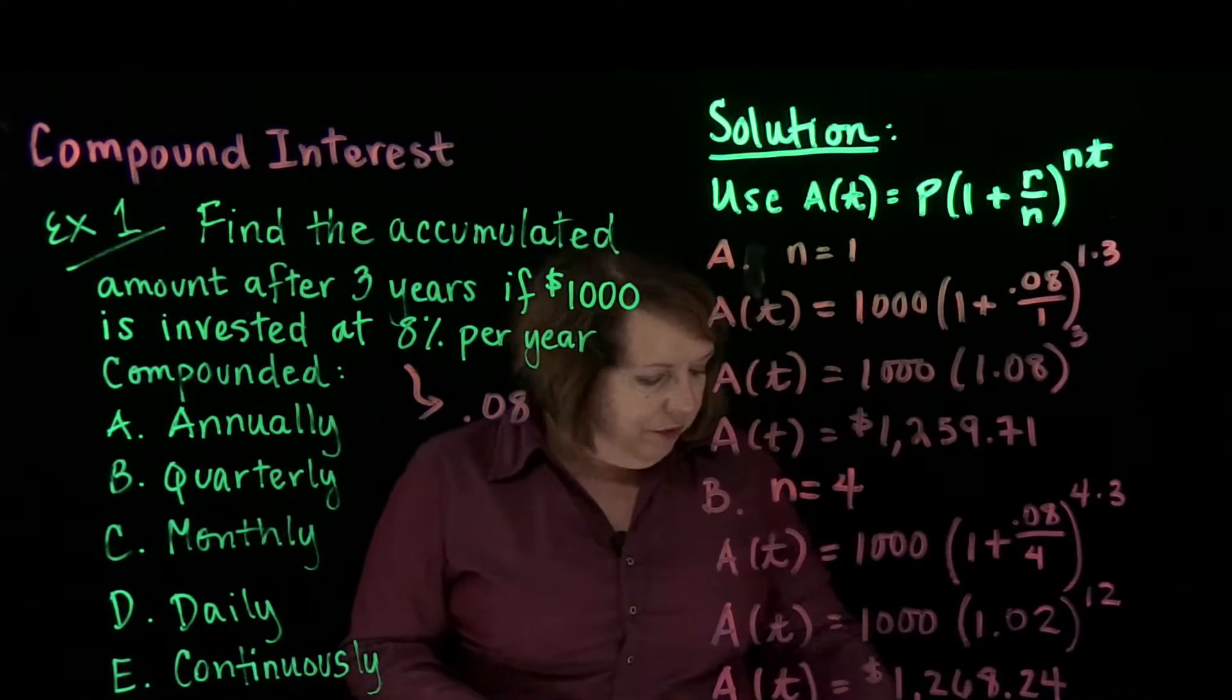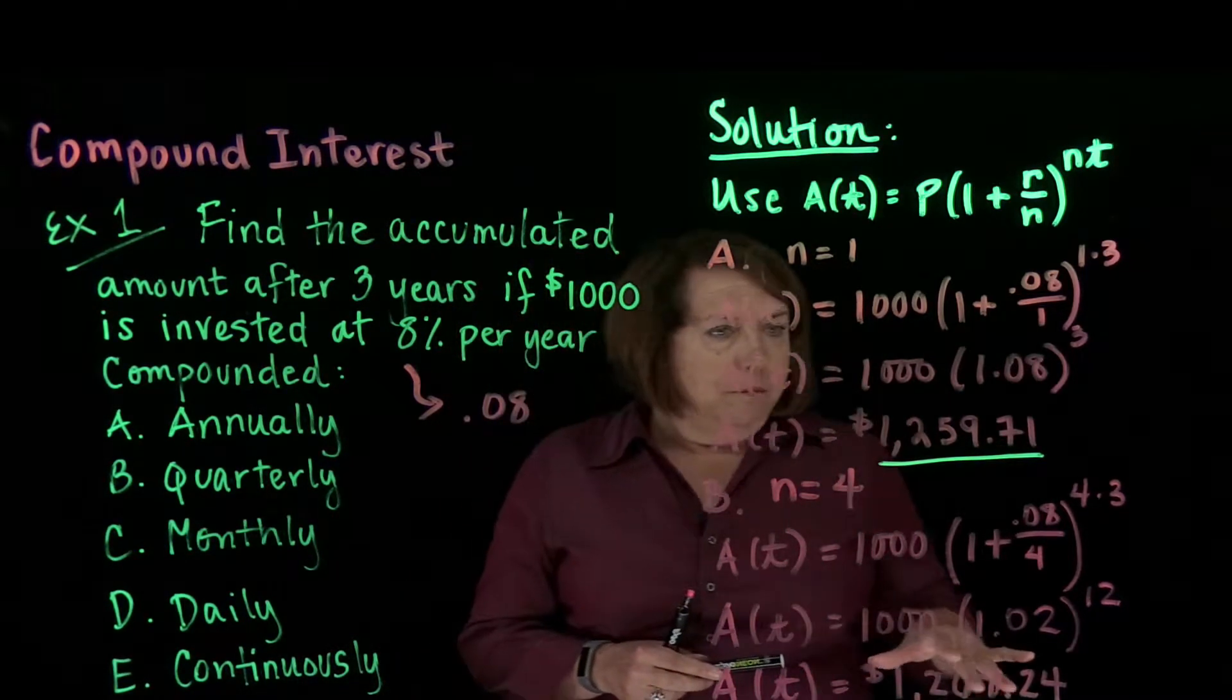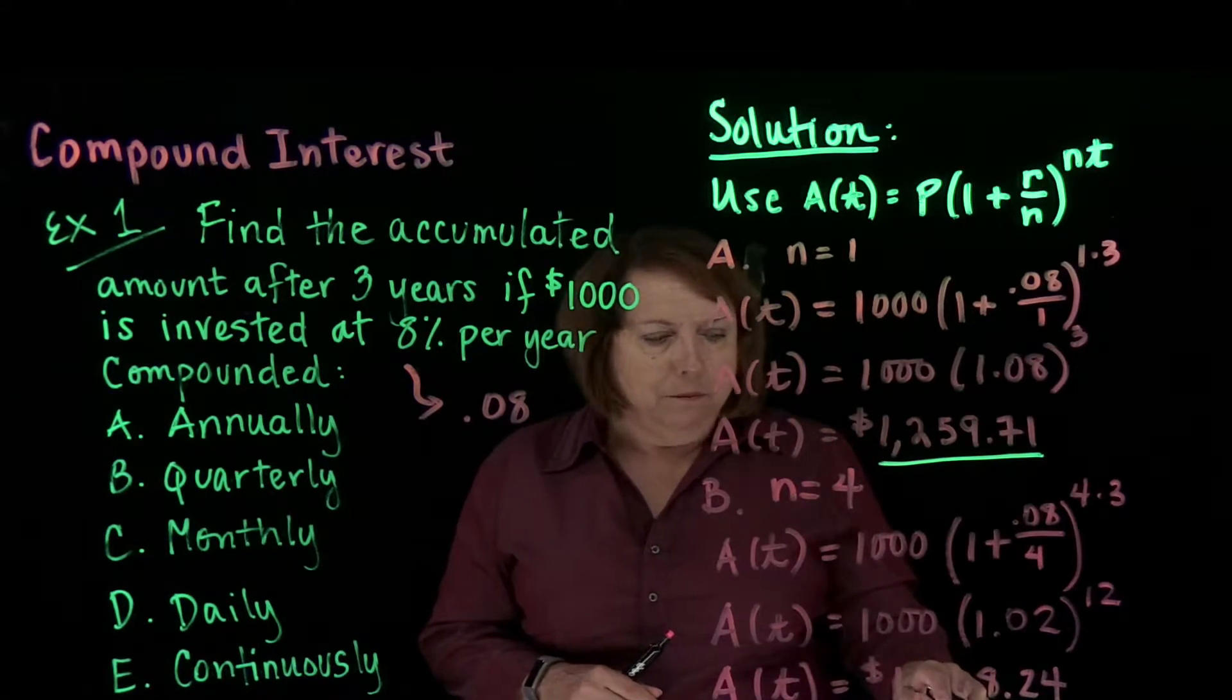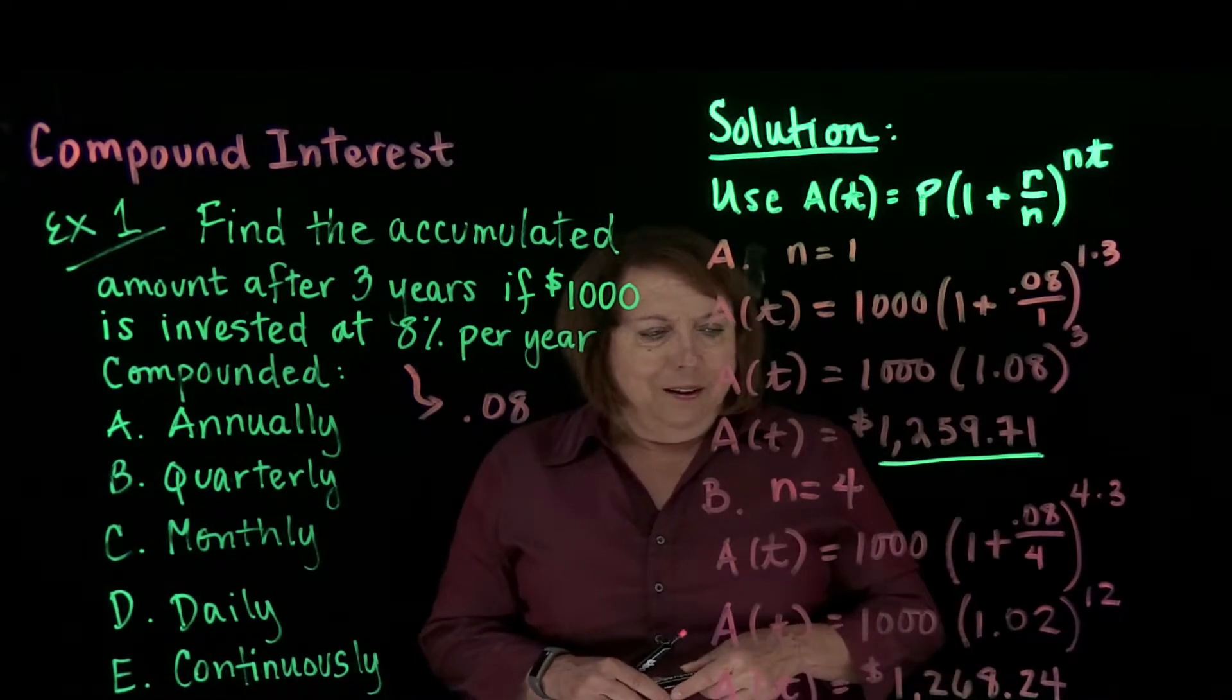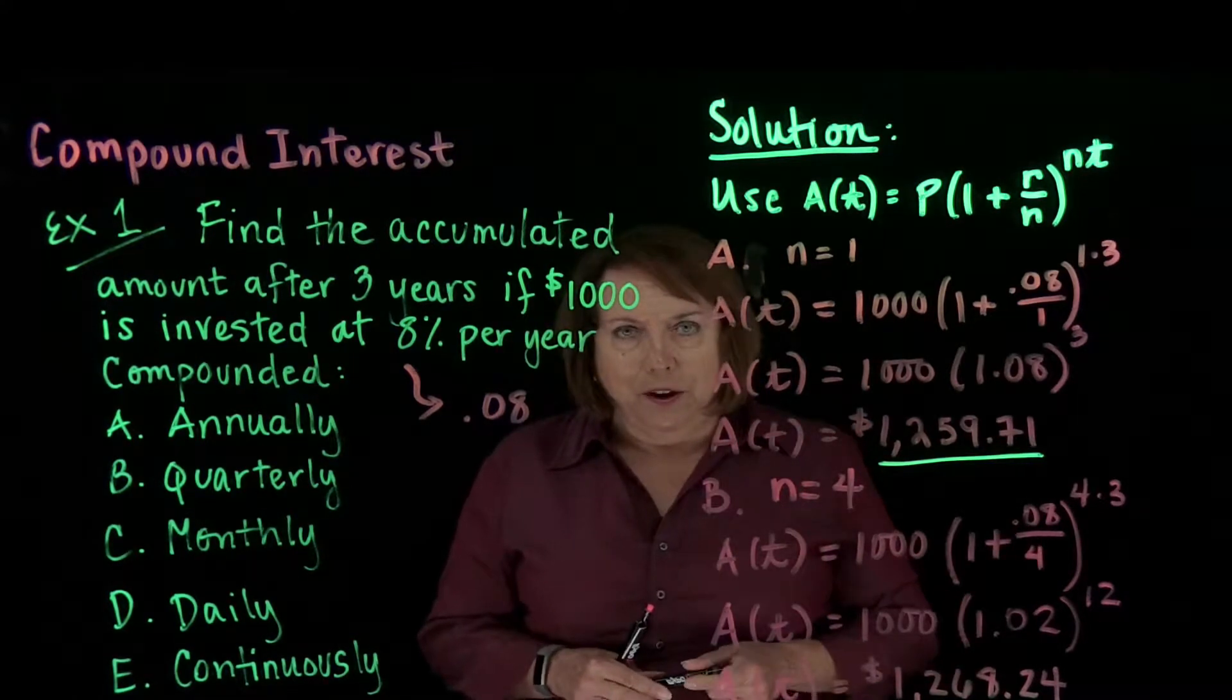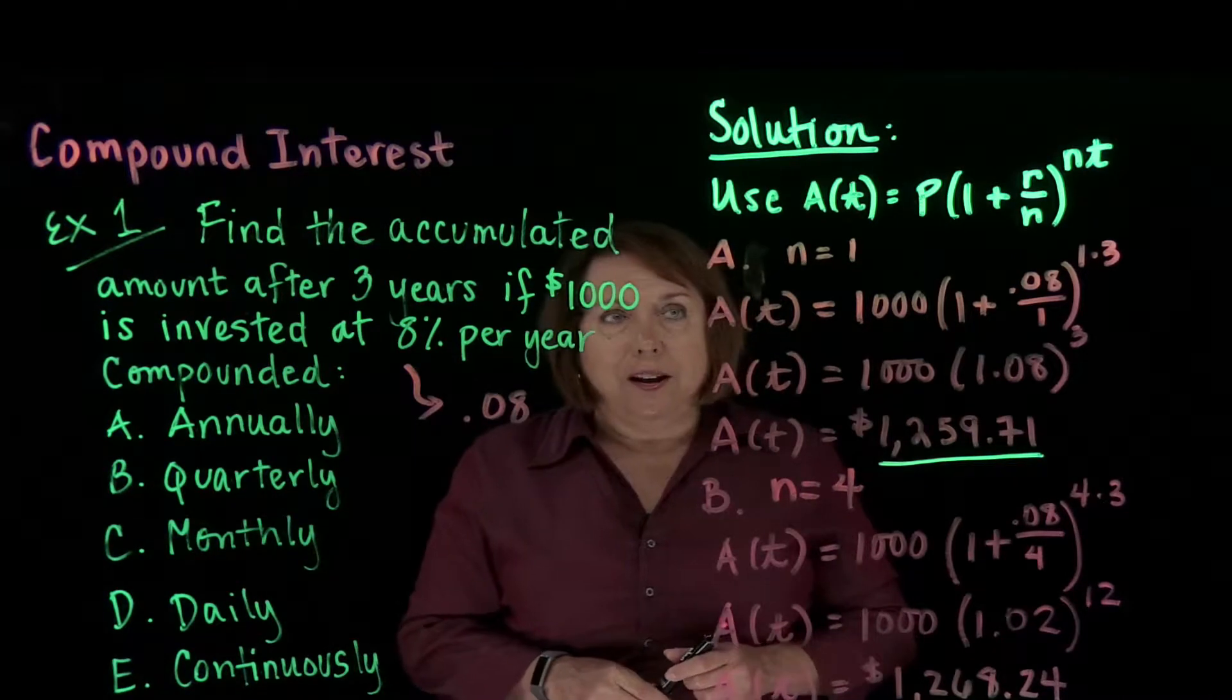Now look at the difference between the first answer and the second answer. You can see they're close, but they're not exactly the same. You get a little bit more money, about $8 and change more. You get a little bit more money if you compound this more often, raising your compounding periods to 4 in 1 year instead of 1. Let's see what happens when you now compound this money monthly.